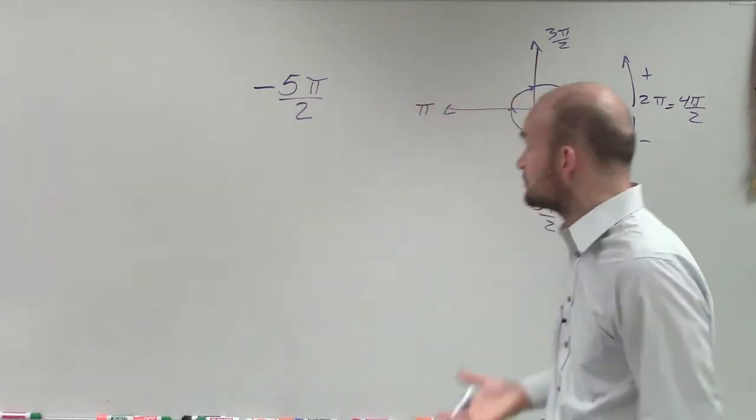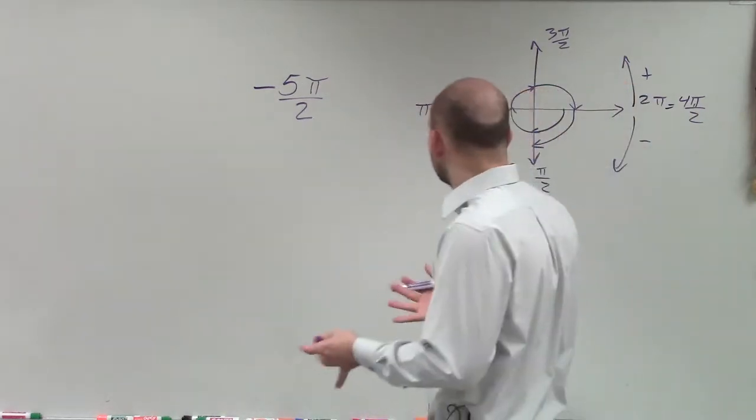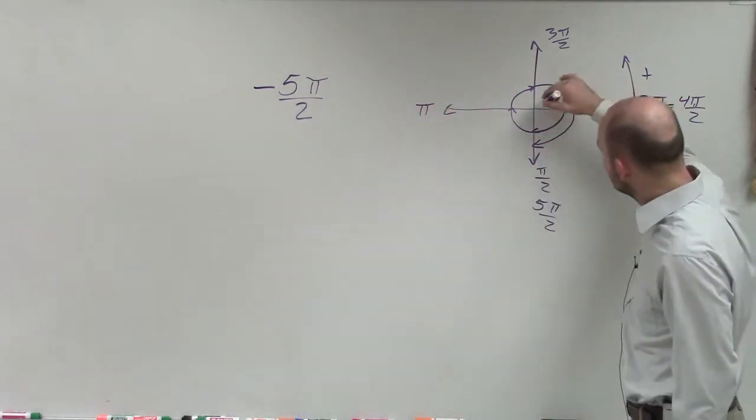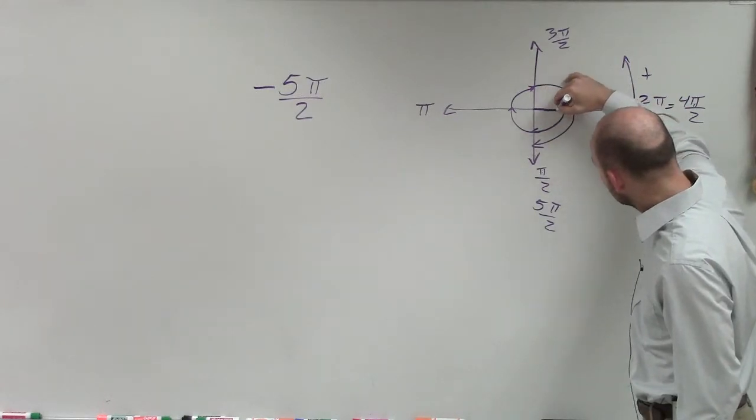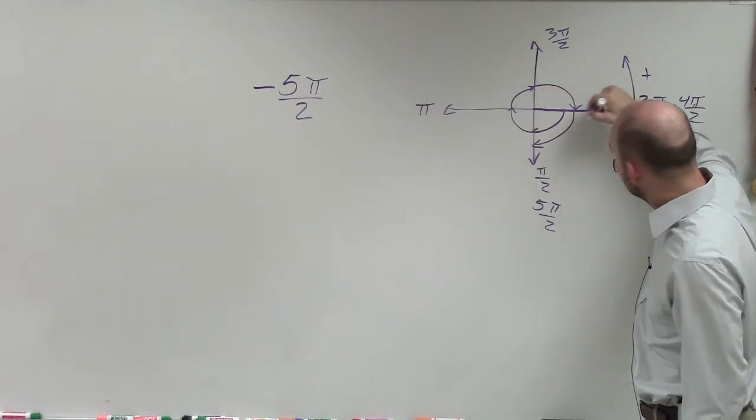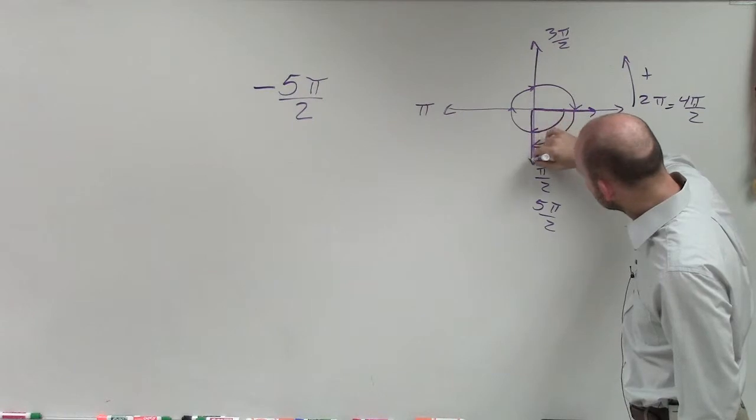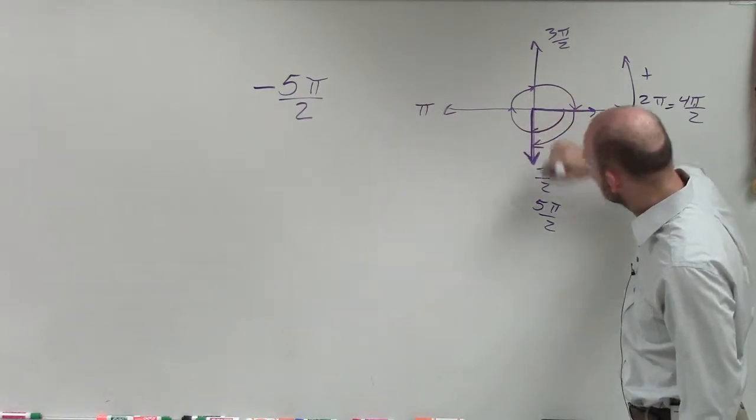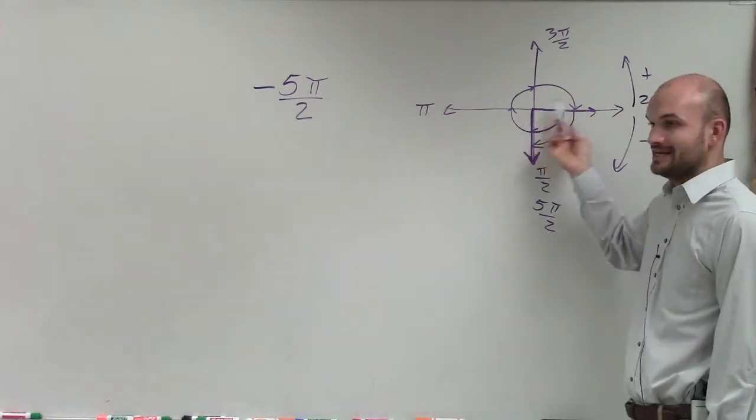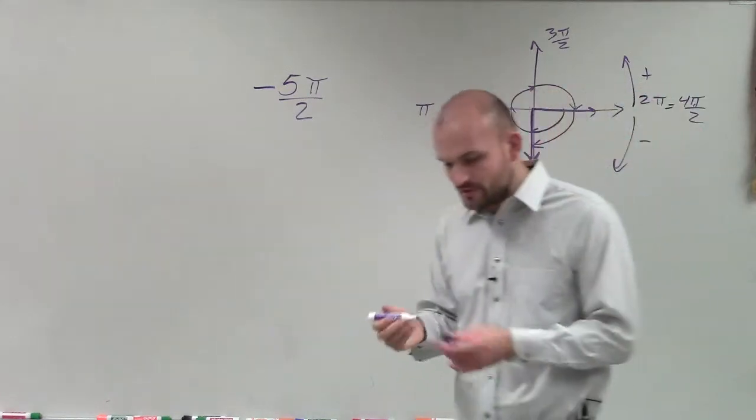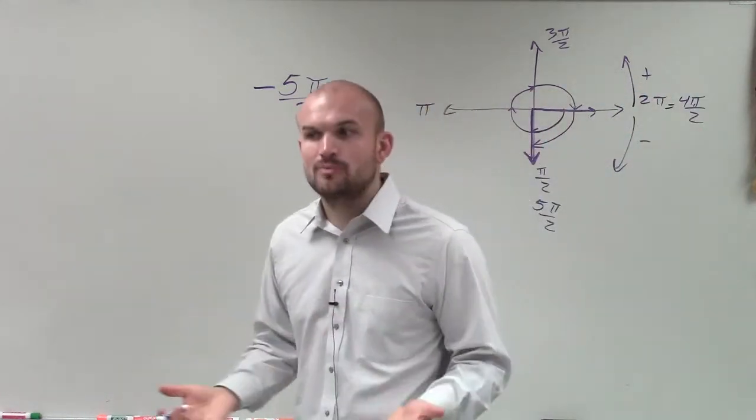So what we're doing is, when we're talking about coterminal angles, we want to find an angle that has the same initial side and the same terminal side. And what we can do is we can add or subtract 2π.